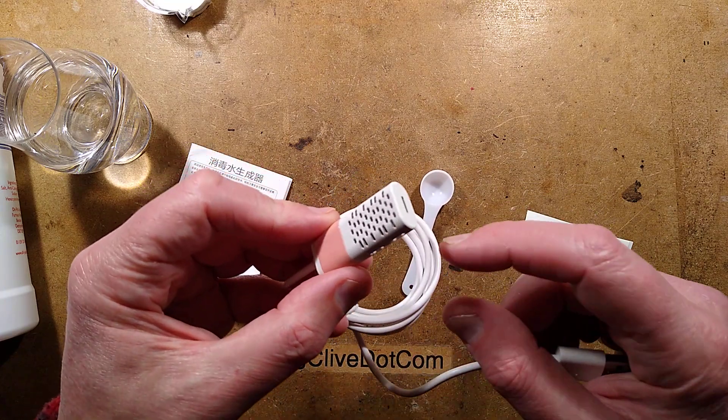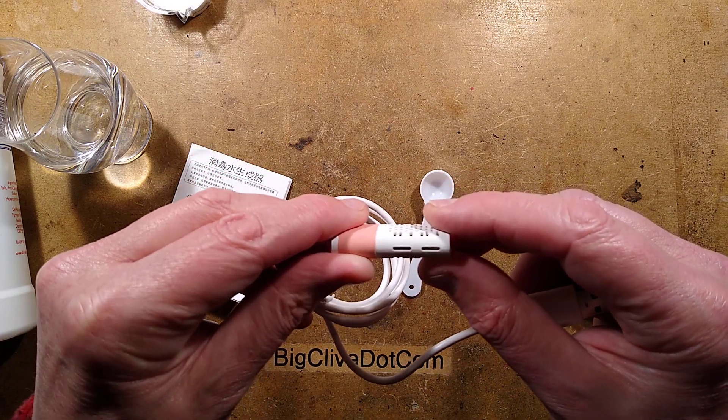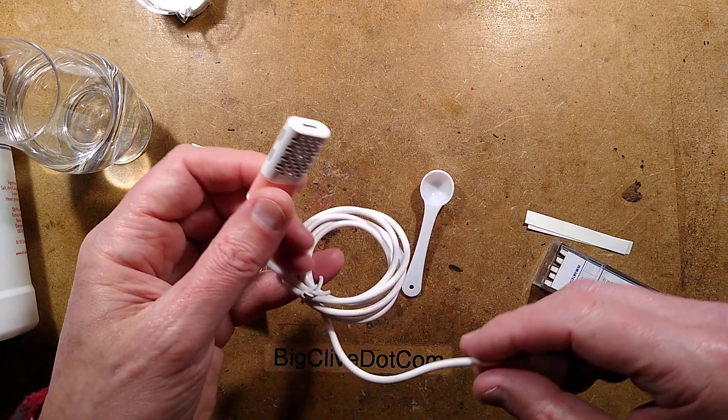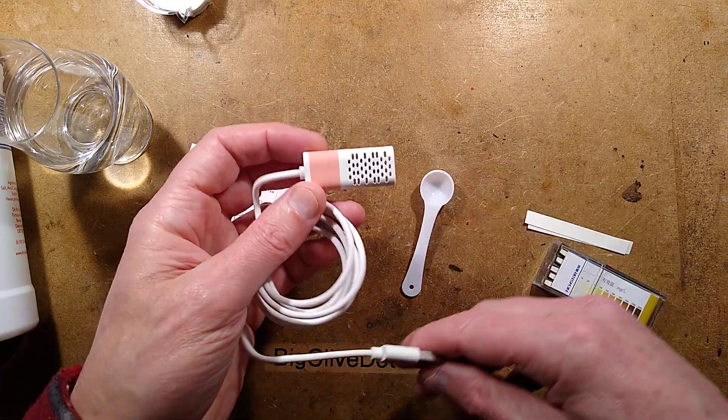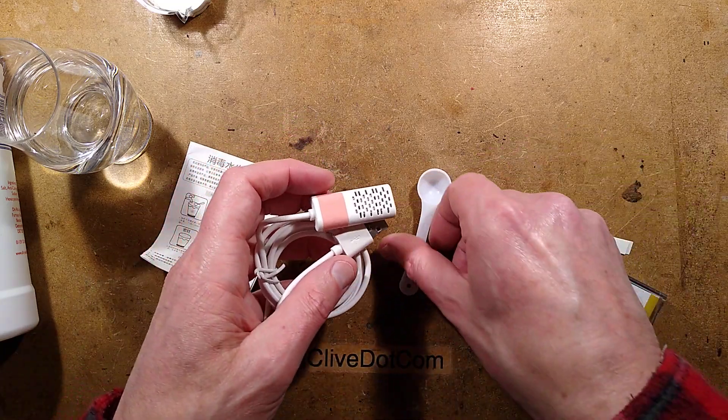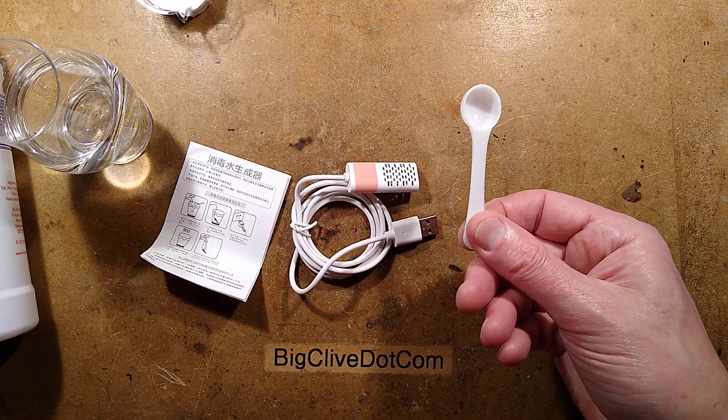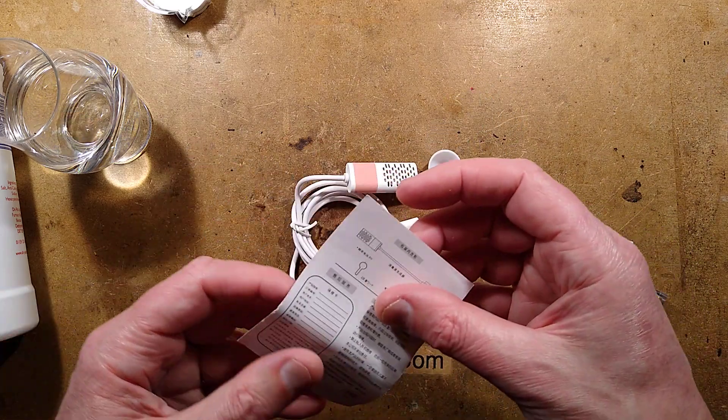It has a USB connector. You can see through the side electrodes inside which I'll take apart later on. I don't know if there's any active electronics in it, we'll find out when I take it apart. You get the unit and you get a scoop of salt and it basically says in the instructions put water into a glass.